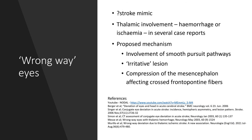A stroke mimic such as a seizure could cause the eyes to deviate in an unexpected direction. Additionally, thalamic involvement — multiple case reports of thalamic haemorrhage and some of thalamic ischaemia — shows that thalamic lesions can produce eye deviation in acute stroke but not in the expected direction, with several proposed mechanisms though no definitive explanation.